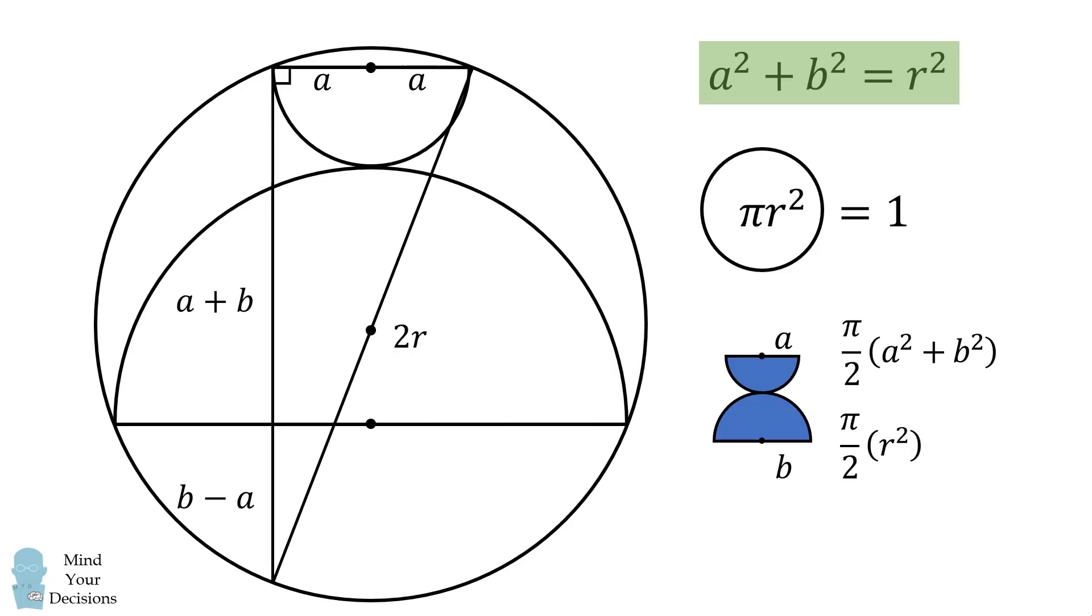We thus have pi over 2 multiplied by r squared. But we know that pi r squared is equal to 1, therefore pi over 2 multiplied by r squared must be equal to 1 half.